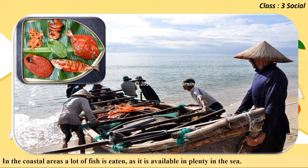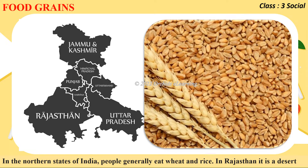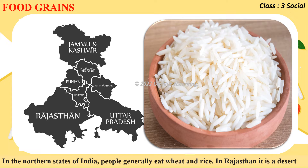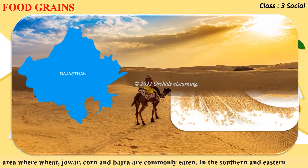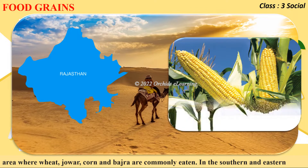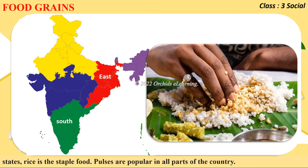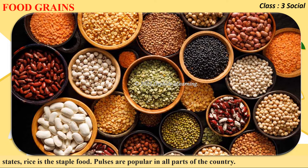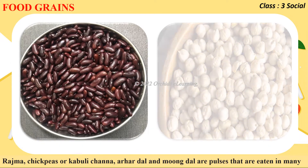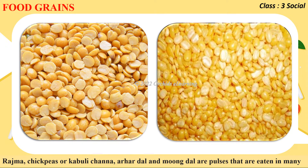In the northern states of India, people generally eat wheat and rice. Rajasthan is a desert area where wheat, jowar, corn, and bajra are commonly eaten. In the southern and eastern states, rice is the staple food. Pulses are popular in all parts of the country. Rajma, chickpeas or kabuli chana, arhar dal, and moong dal are pulses that are eaten in many parts of India.